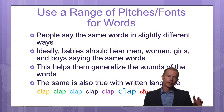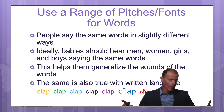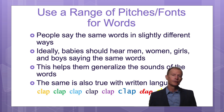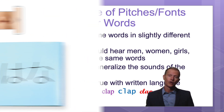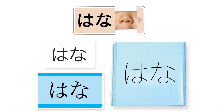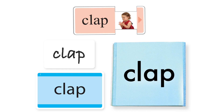Just as with what objects look like, you also want to use a range of pitches when you're talking, or different fonts when you are showing the baby words. You want to use different fonts — and you'll notice here that the fonts are different — and that helps the baby generalize when they see a different font they've never seen before.